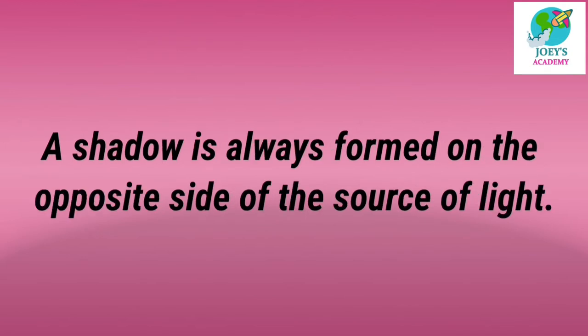A shadow is always formed on the opposite side of the source of light. Shadow जो है, वो source of light के opposite side में form होती है. Source of light मतलब जहां से, या जिससे हमें light मिलती है, उसे source of light कहते हैं. और opposite side मतलब सामने वाली side — जैसे आपके सामने से sunlight आ रही हो, तो shadow उसके opposite side, याने पीछे वाली side में form होती है.